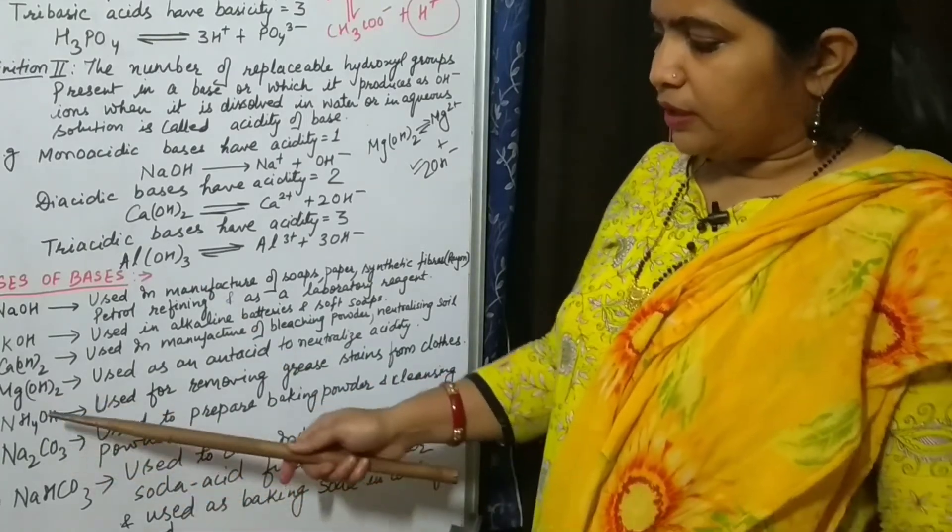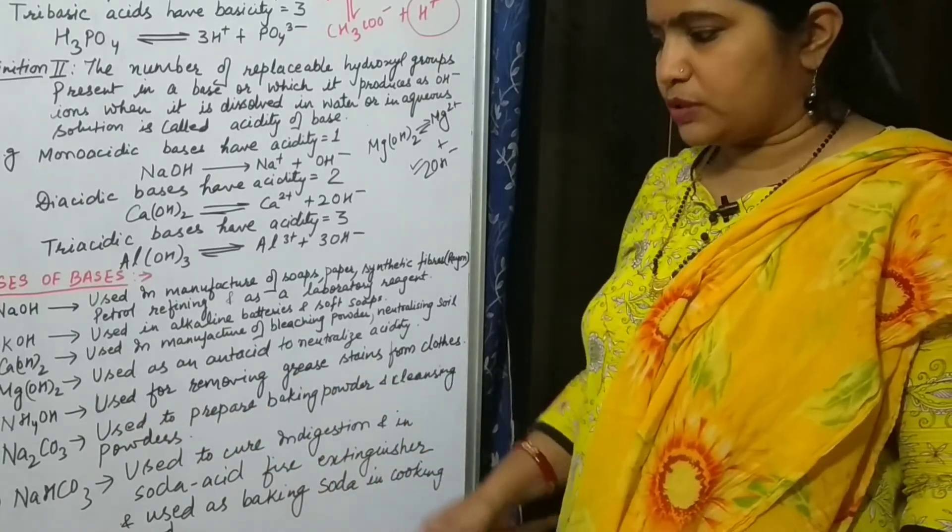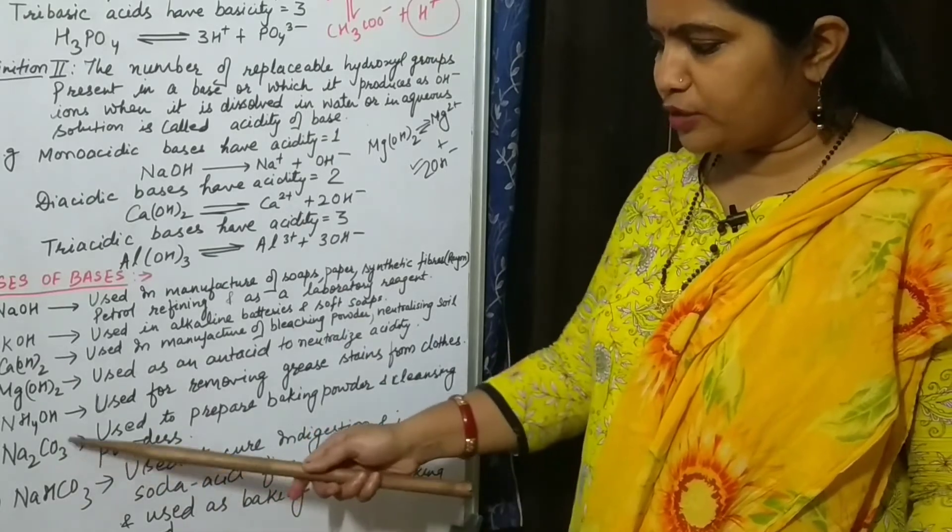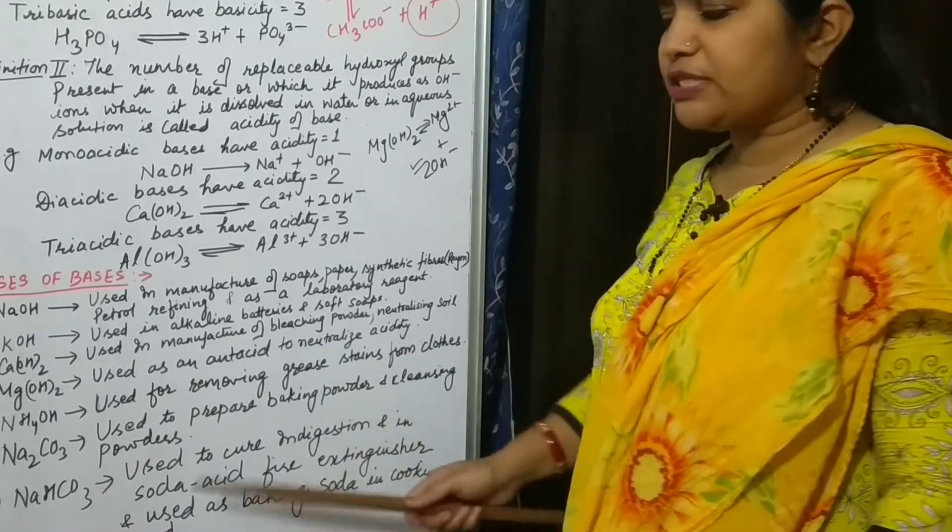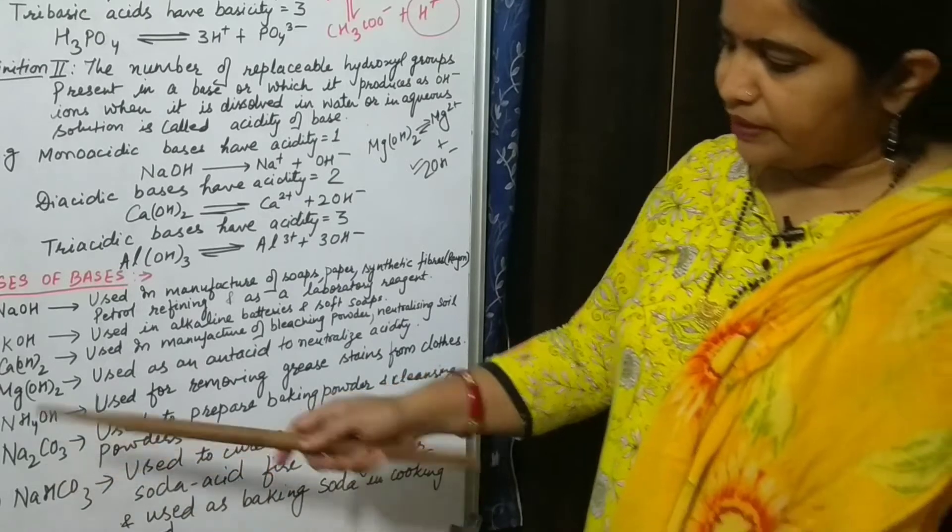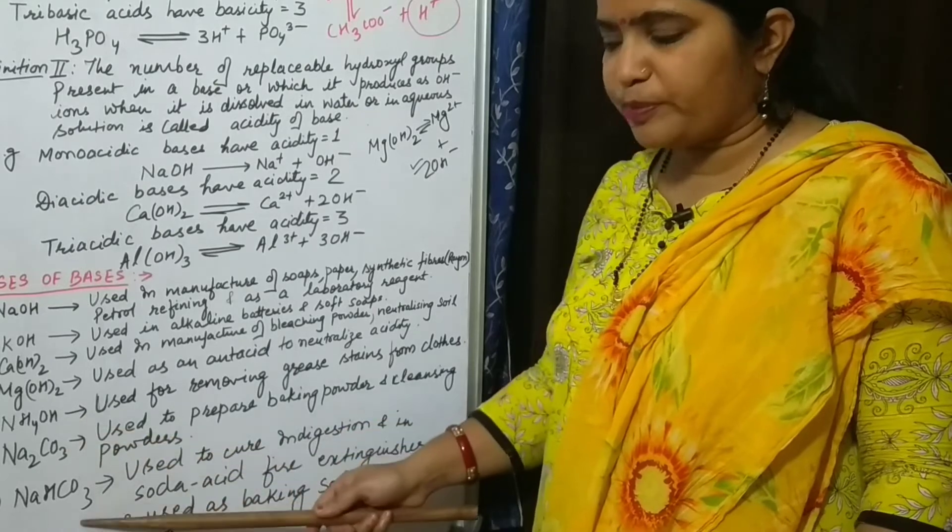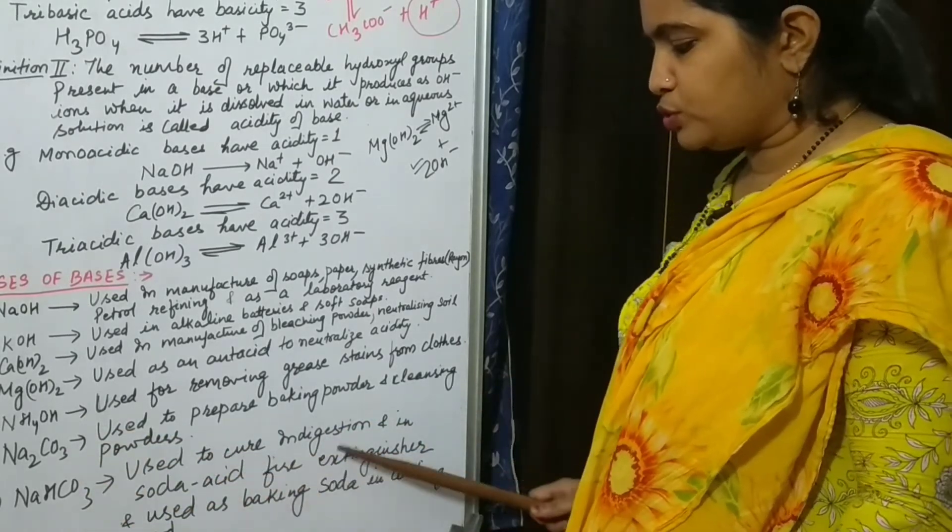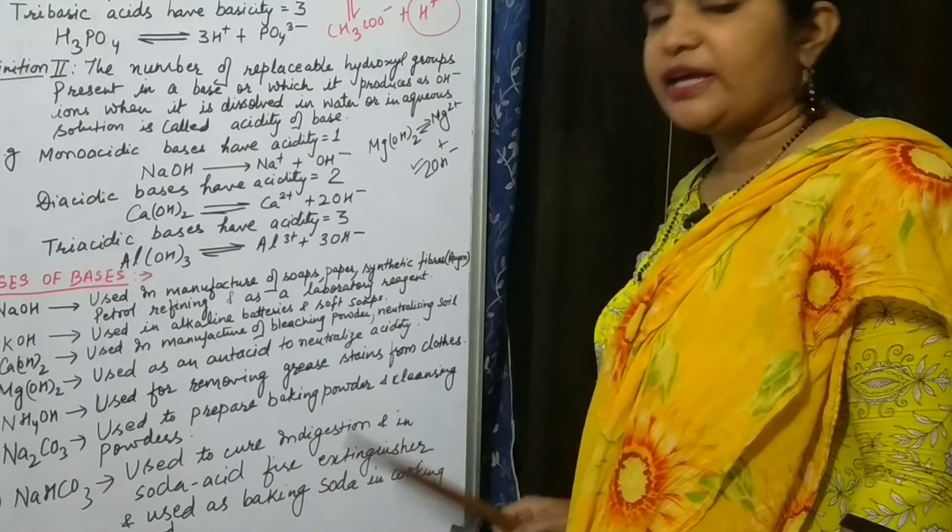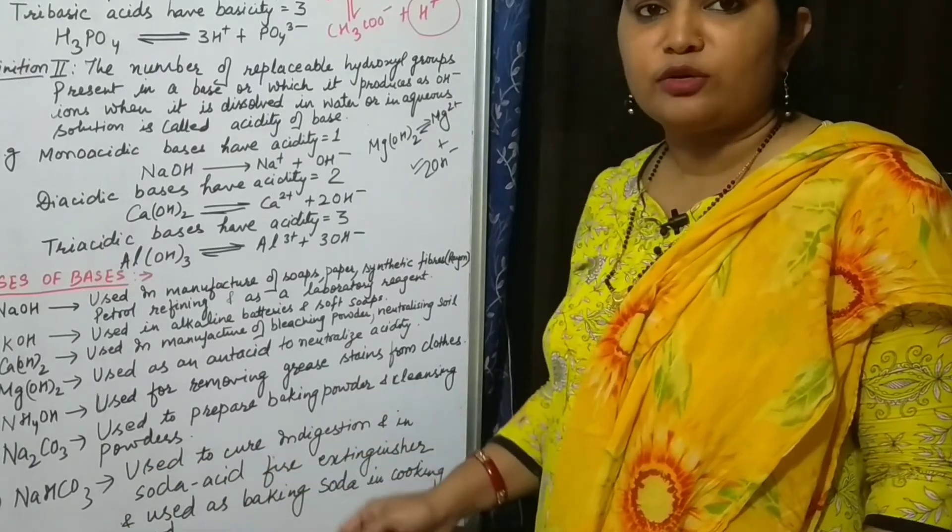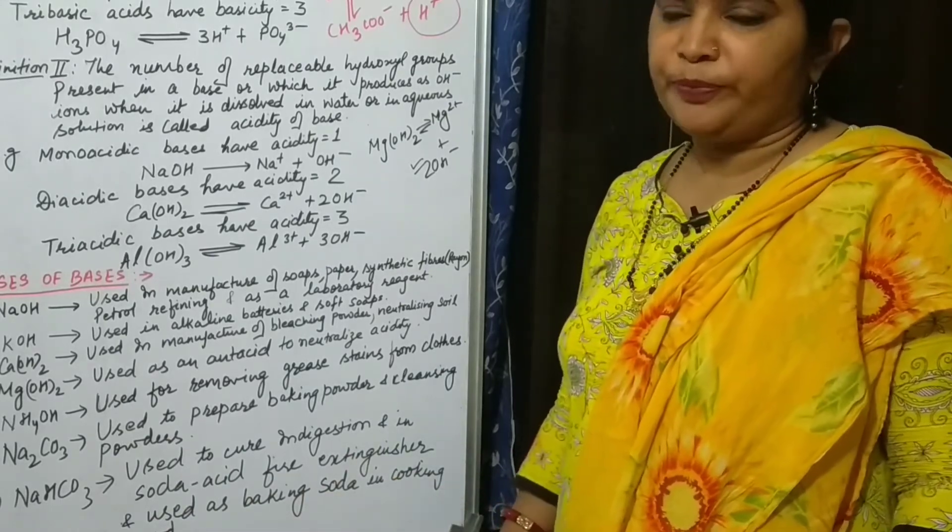Fifth is NH4OH. It is used for removing grease or stains from the clothes. Next is sodium carbonate, Na2CO3. It is used to prepare baking powder and cleansing powders - cleansing powders means detergent, washing sodas. Seventh is sodium hydrogen carbonate. Just now I told you sodium carbonate is used to prepare sodium hydrogen carbonate. It is also used to cure indigestion and in very important uses: soda acid fire extinguisher. This also you have studied in your previous classes. And it is used as baking soda in cooking food also.